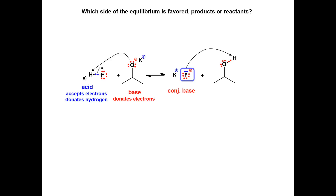For the reverse reaction, identify the conjugate acid and conjugate base. Draw an arrow to show electron donation of the base to form the fluorine-hydrogen sigma bond and the breaking of the hydrogen-oxygen bond on the acid.